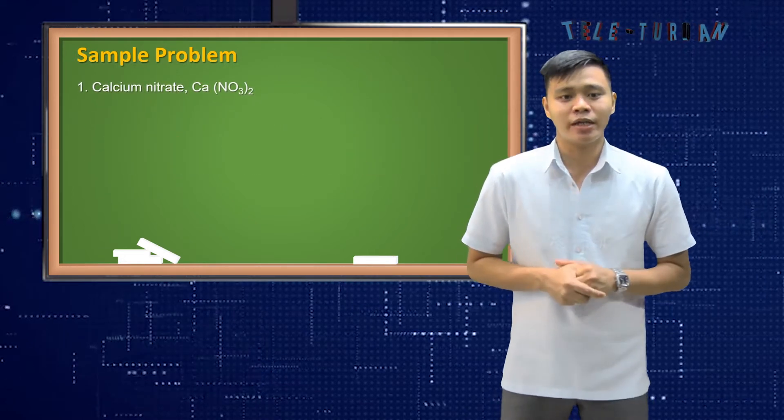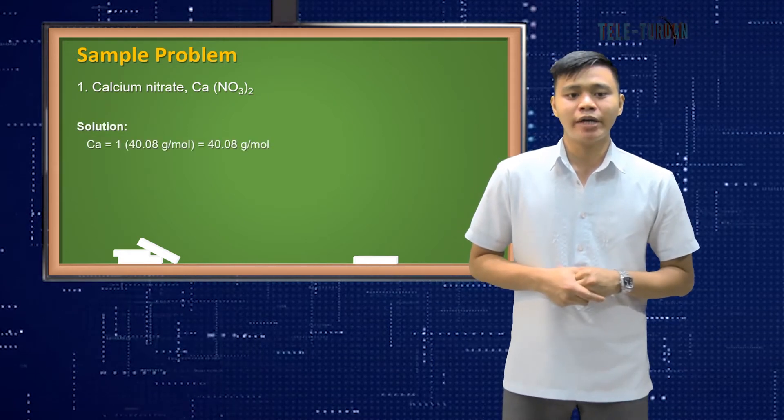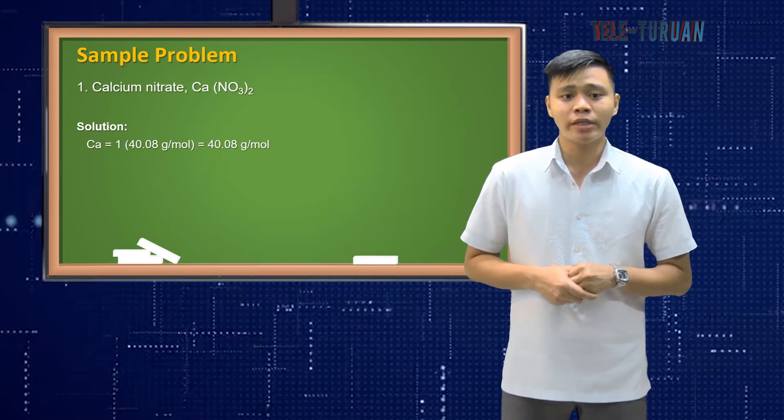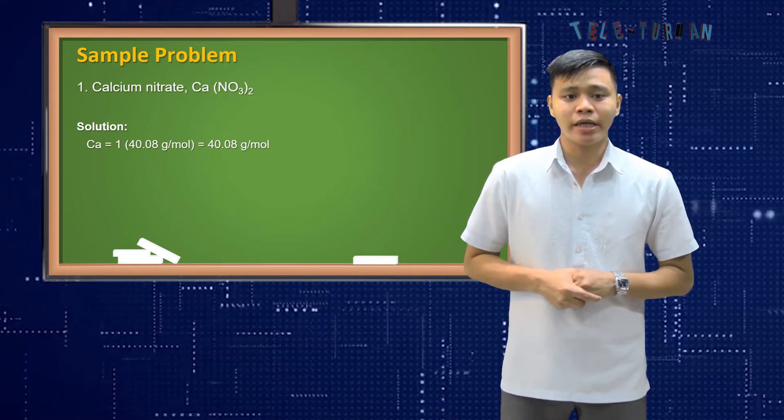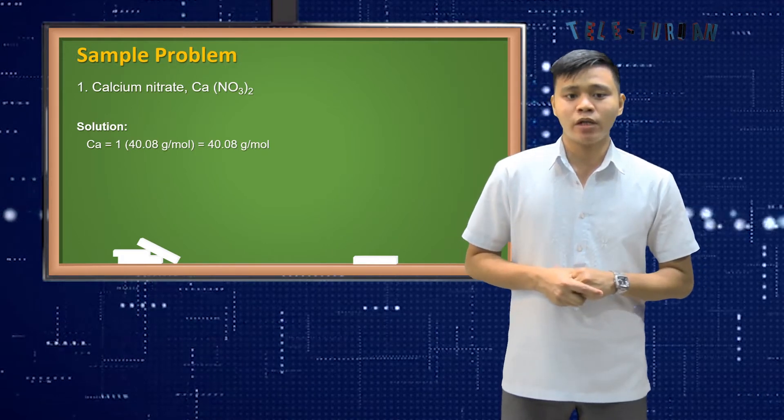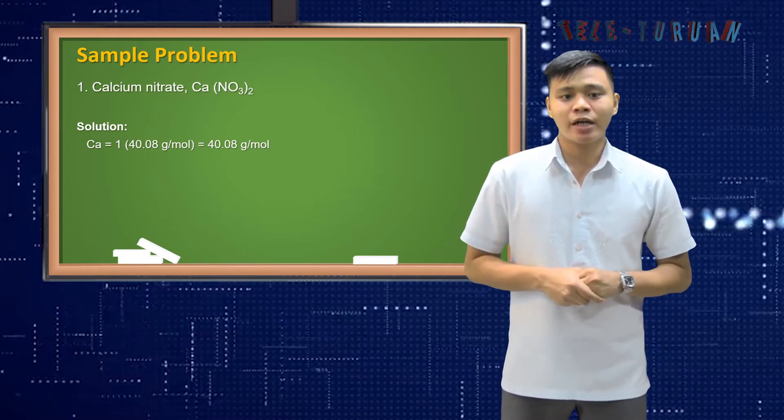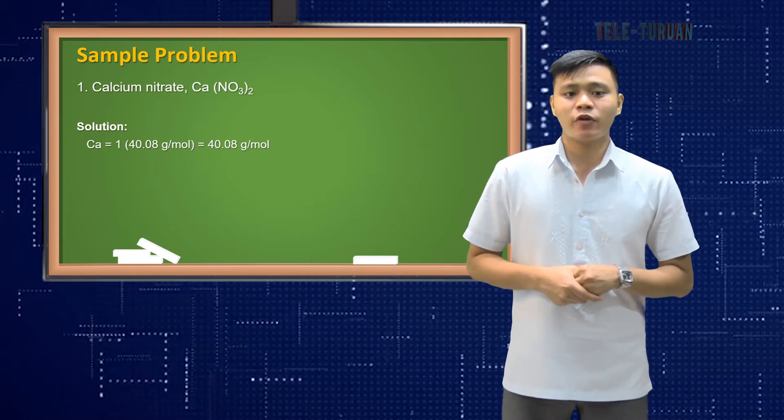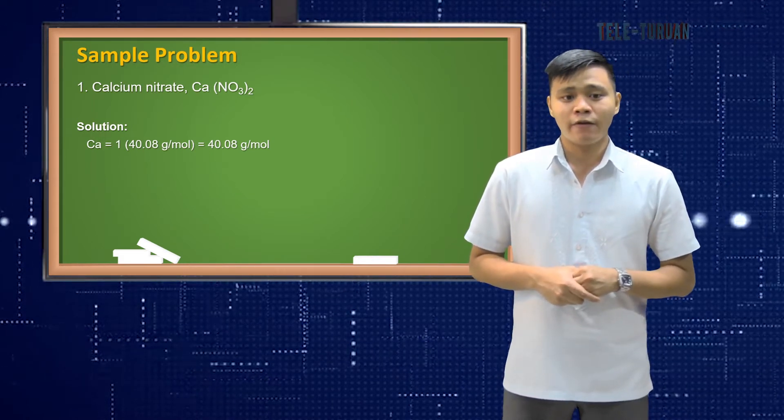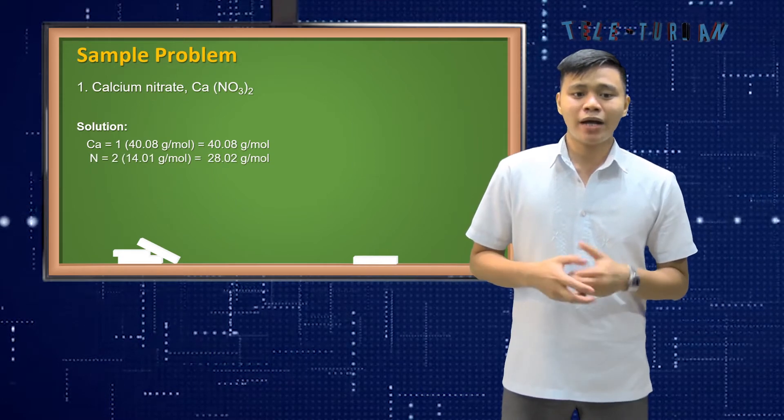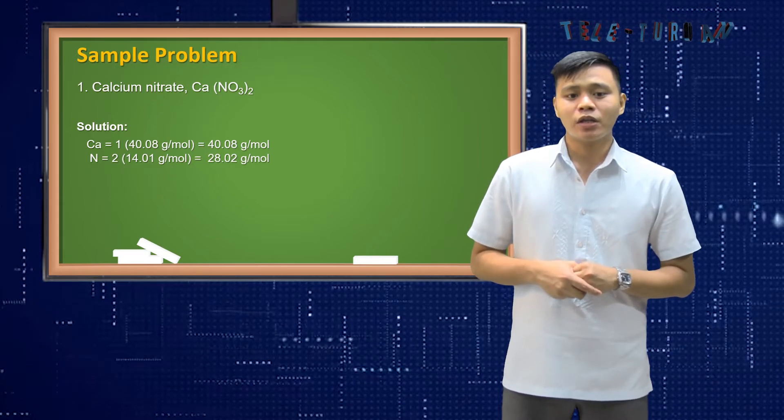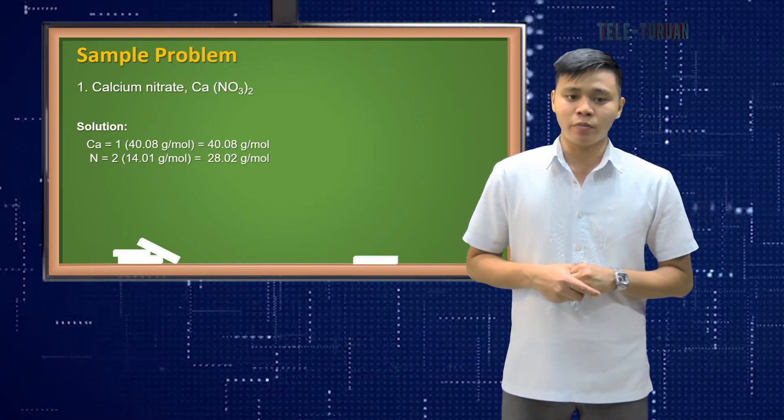Here's the solution for number one. For calcium nitrate, we have Ca is equal to 1 since we only have one atom in the compound of calcium nitrate. So 1 times its molar mass that we can get from our periodic table which is equal to 40.08 grams per mole. So 1 times 40.08 is equal to 40.08 grams per mole. For nitrogen, there are two atoms in the compound. So 2 times 14.01 is equal to 28.02 grams per mole.